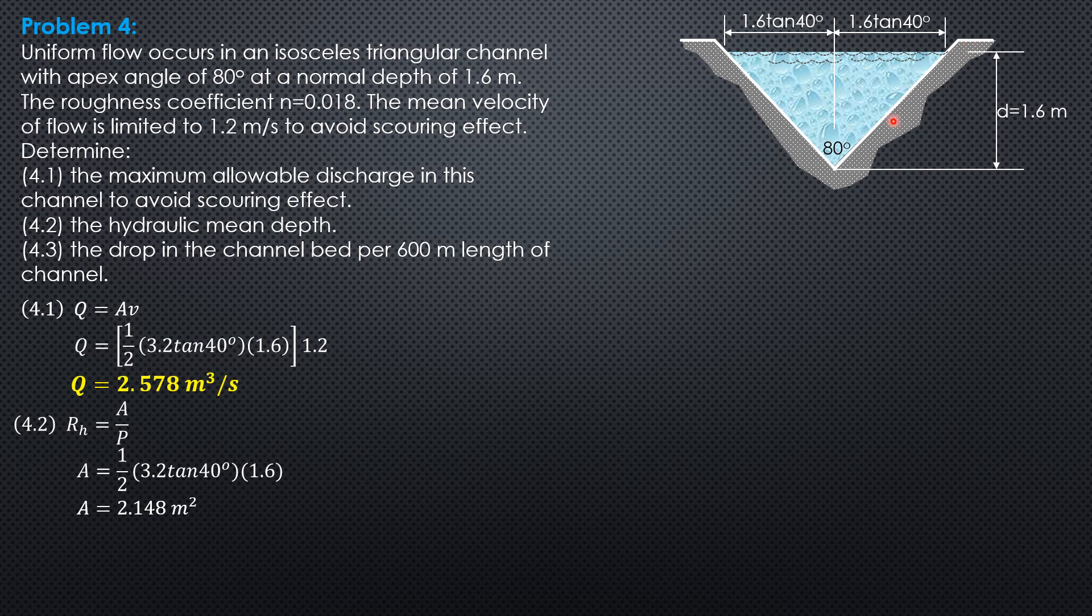The wetted perimeter, this is again 1.6 over cosine of 40. Cosine of 40 degrees is 1.6 over this slant side, so the slant side is 1.6 over cosine 40. So the wetted perimeter is 2 times 1.6 over cosine 40 degrees, so the wetted perimeter is 4.177 meters. Hydraulic mean depth therefore is 2.148 over 4.177, which equals 0.5142 meters.